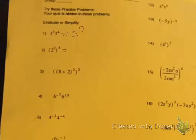Next one, we are raising a power to a power, so you're going to distribute the 4 by multiplying. So your base is 2, and 4 times 2 is 8.